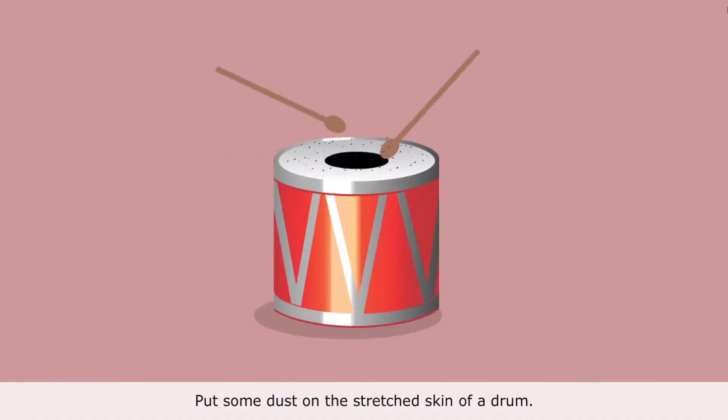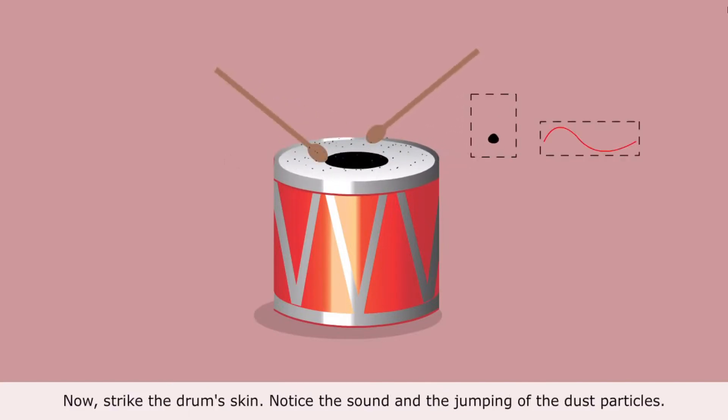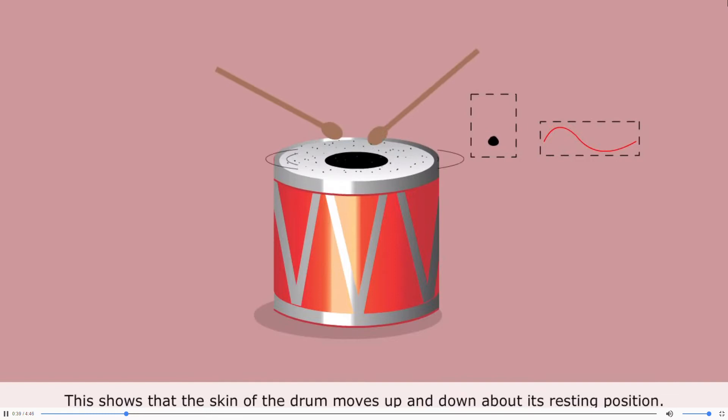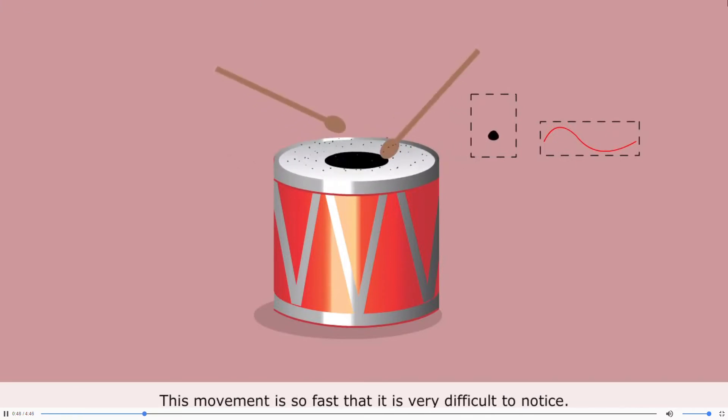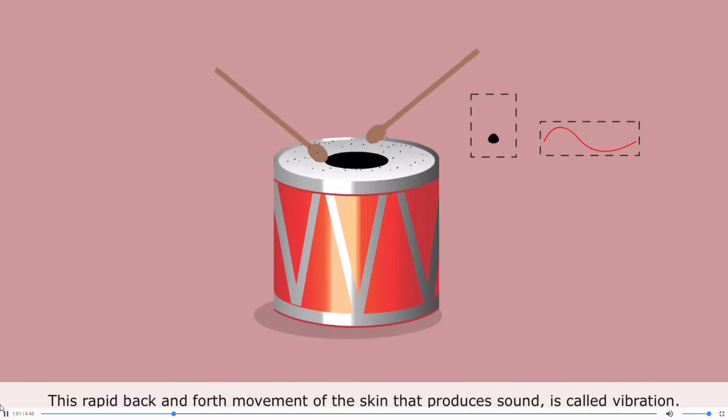Put some dust on the stretched skin of a drum. Now, strike the drum's skin. Notice the sound and the jumping of the dust particles. This shows that the skin of the drum moves up and down about its resting position. This movement is so fast that it is very difficult to notice. We use the term oscillation to refer to a to and fro movement of an object. This rapid back and forth movement of the skin that produces sound is called vibration.